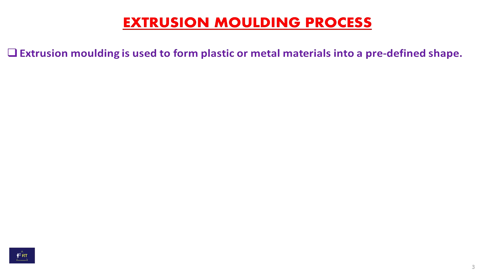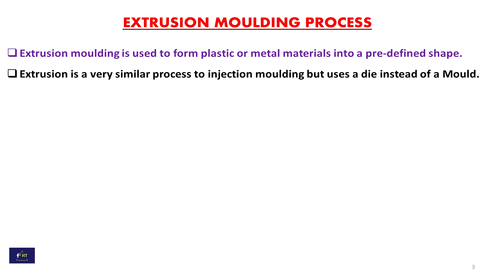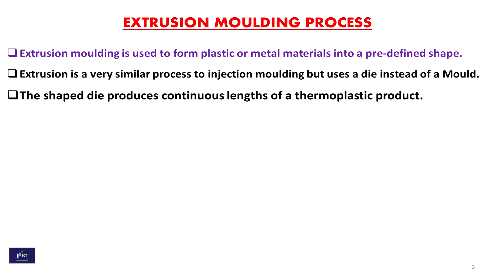Extrusion Molding Process. Extrusion molding is used to form plastic or metal materials into a predefined shape. Extrusion is a very similar process to injection molding, but uses a die instead of a mold to form the shape.